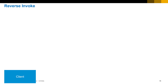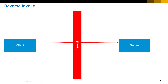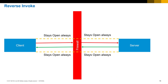Having understood this, now we can take a stab at reverse invoke. The client makes an HTTP request to the server and the server responds back, so port 80 outbound on the firewall is open. But here we keep the connection open all the time. The client has invoked the connection and it is kept open all the time — that's why we use the word 'invoke.' Because the connection is open all the time, the server at any given time can make a request to the client, so the roles are kind of reversed.